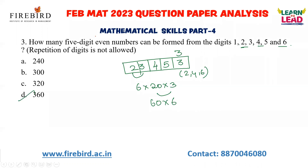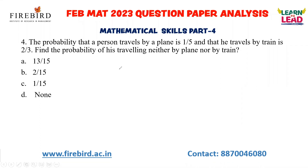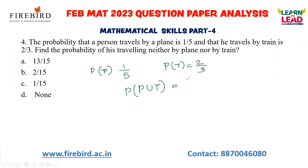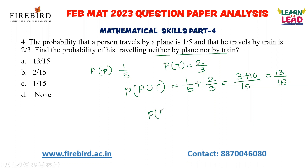The probability that a person travels by plane is 1/5, and by train is 2/3. The probability of travelling by plane or train is 1/5 + 2/3. The LCM of 5 and 3 is 15, giving 3/15 + 10/15 = 13/15. But the question asks for the probability of travelling neither by plane nor by train, which is 1 − 13/15 = 2/15. So 2/15 is your answer.